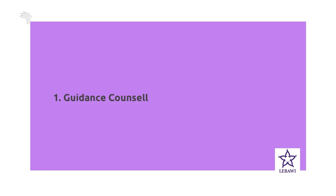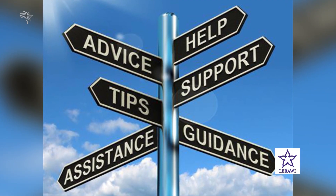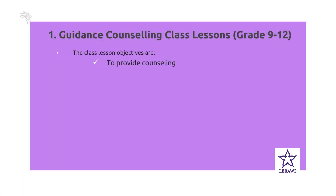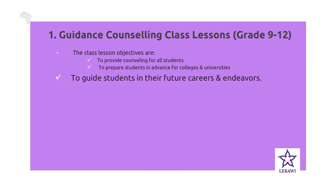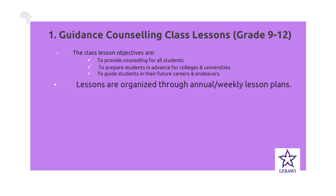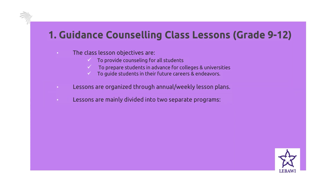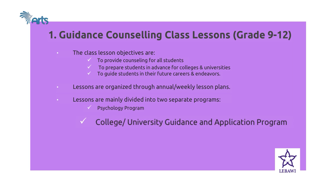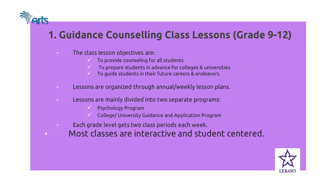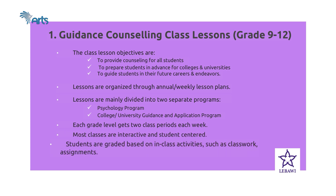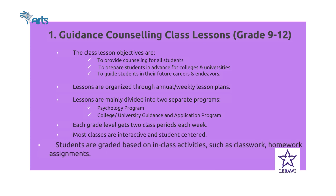First, let's look at guidance counseling class lessons from grade 9 to 12. The class objectives are: first, to provide counseling classes for all students; number two, to prepare students in advance for college and university; and number three, to guide students in their future careers and endeavors. The lessons are organized through annual and weekly lesson plans and are divided into two categories: psychological and behavioral, and college and university guidance counseling. Each grade level gets two class periods each week, and most classes are interactive and student-centered. Students are graded based on class activities such as classwork, homework, and assignments.